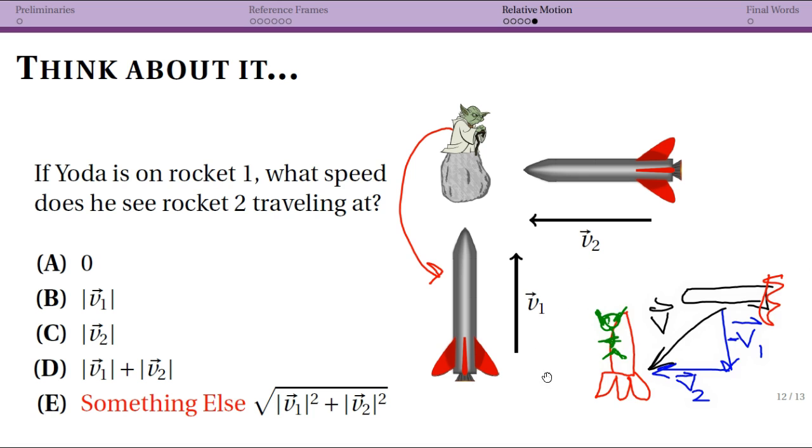What my super awesome picture down here shows you is that Yoda is now on this rocket—we don't even need to worry about the asteroid now—and the rocket on the right is not only now traveling to the left, but is also traveling downwards with respect to Yoda. And so you get a hypotenuse and you would only be able to then figure out the speed by doing the square root of the sums of the magnitudes of these two vectors, so that would give you the new speed.